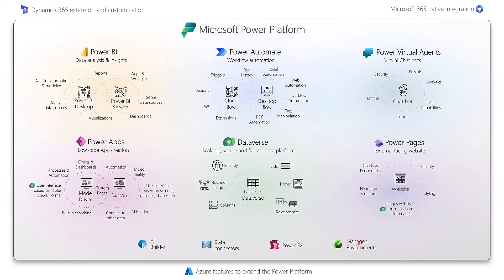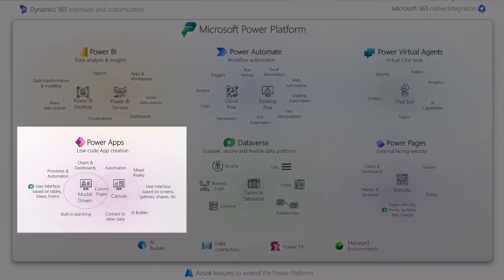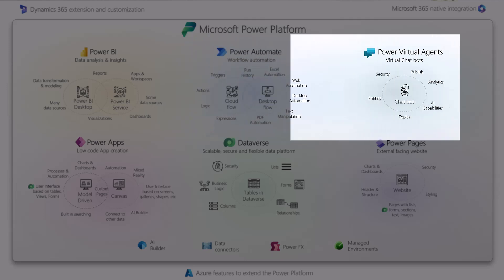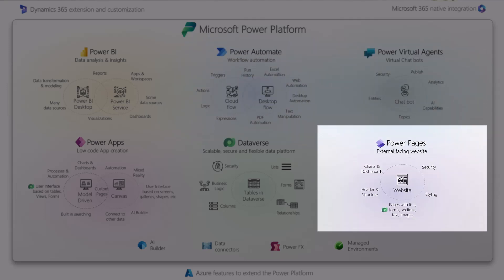Environments are like containers to store your apps, your data, and your configuration. For example, you typically have Dev, Test, and Prod environments. Managing environments gives more control to admins — they can set limits on sharing, gain insights about environments, and create data policies. The main benefits of using the Power Platform are that it lets you quickly build applications with no code or very little code: you can build Power Apps with drag and drop, create visualizations in Power BI, build workflows in Power Automate, and create external websites with Power Pages using easy-to-use interfaces.